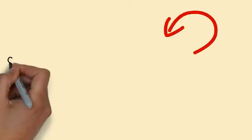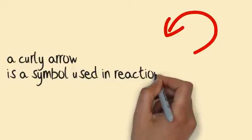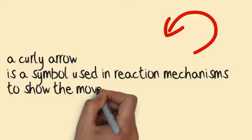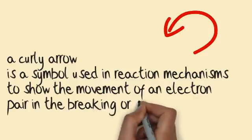A curly arrow is a symbol used in reaction mechanisms to show the movement of an electron pair in the breaking or formation of a covalent bond.